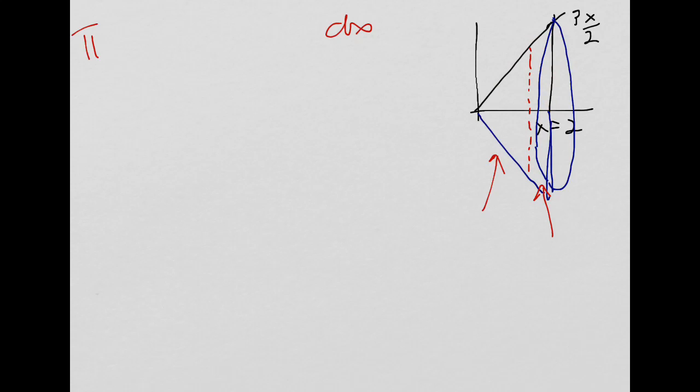I'm gonna do washer method, so my volume is going to be v equals pi times the integral of r squared dx. So my radius is just this length right here, which is the integral of three over two x.